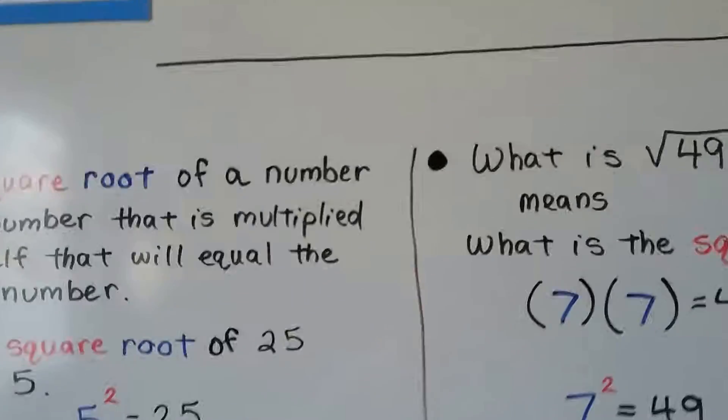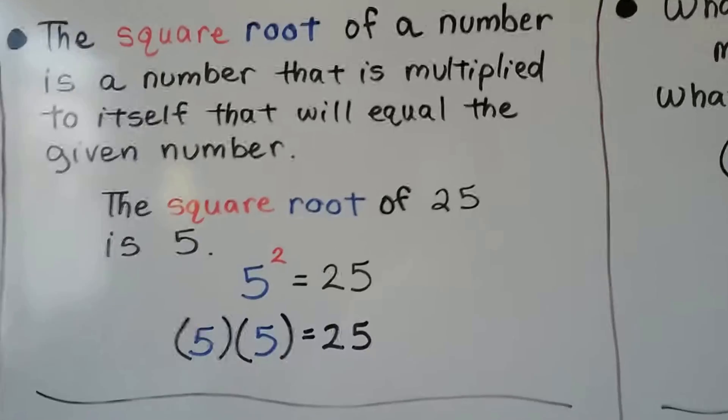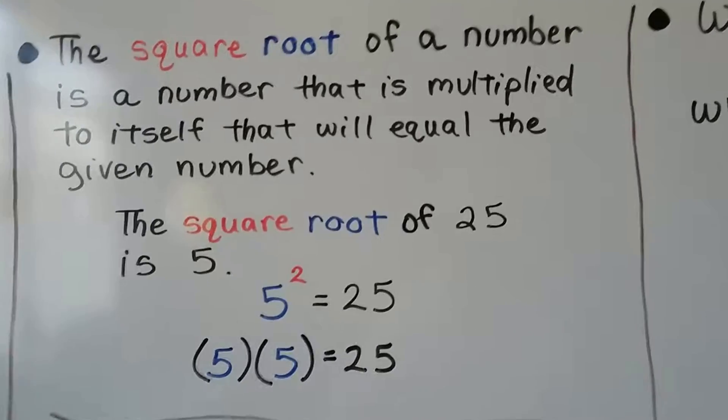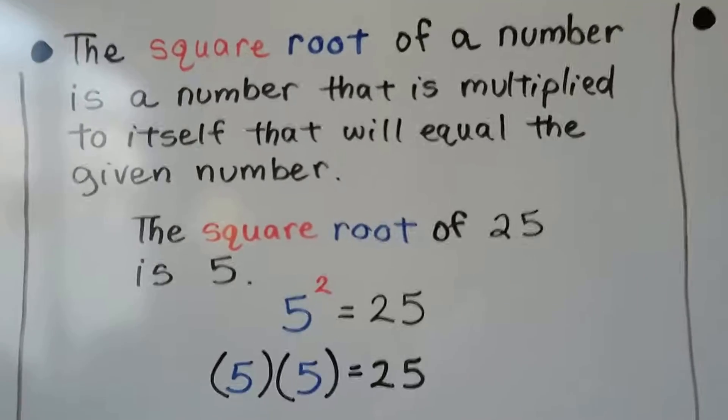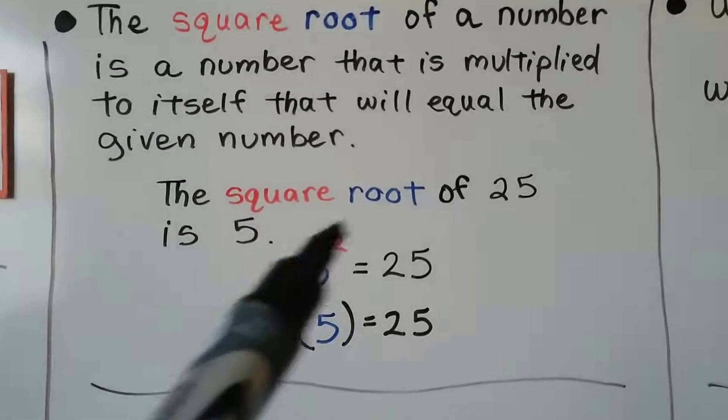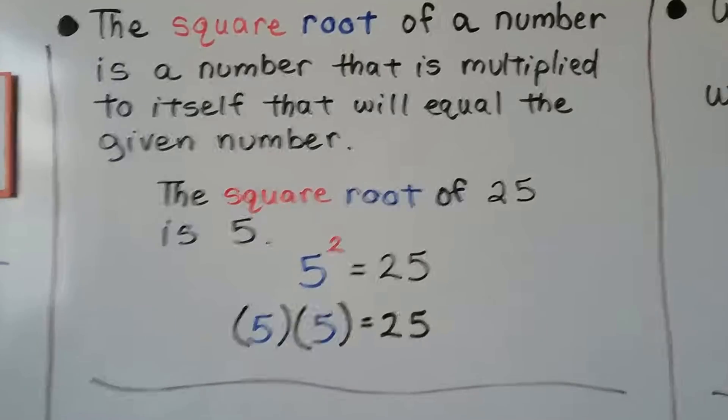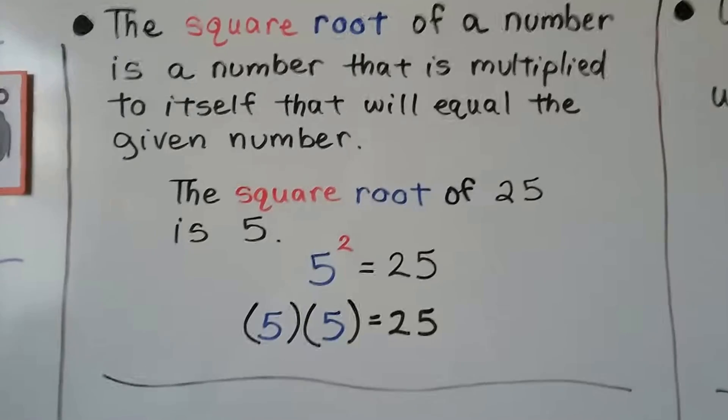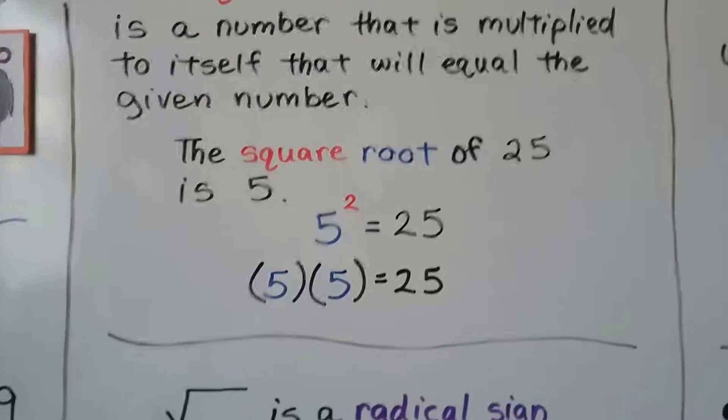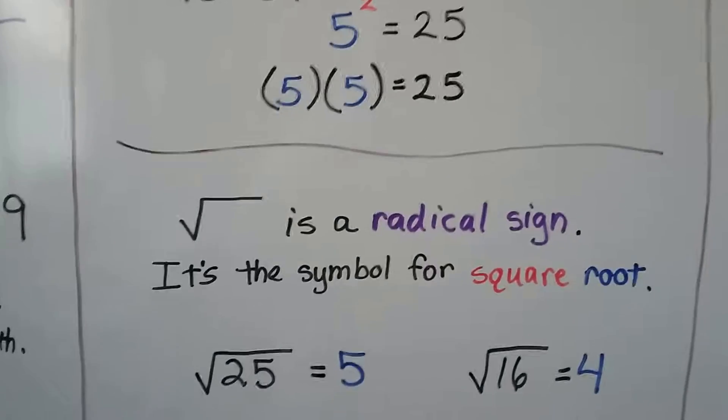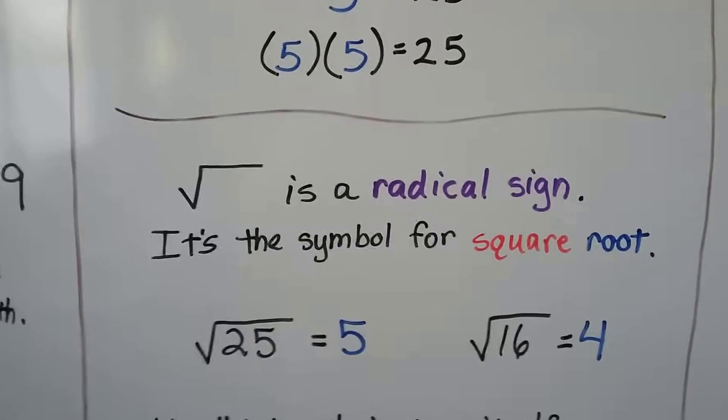Those are some important words for you. The square root of a number is a number that is multiplied to itself that will equal the given number. And the square root of 25 is 5. 5 squared, 5 to the second power, equals 25, because 5 times 5 equals 25. The square root of 25 is 5. This is our radical sign, and it's the symbol for square root.